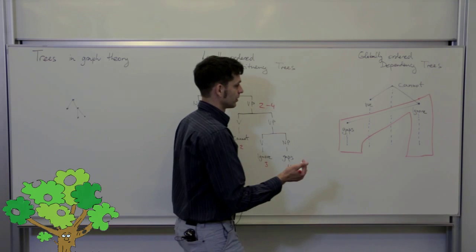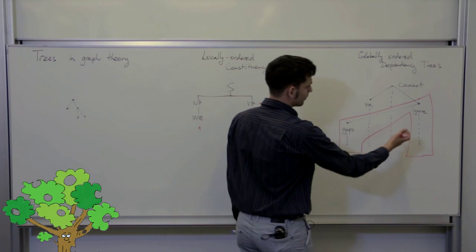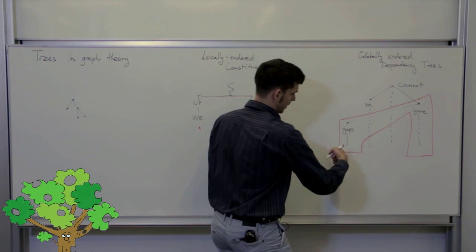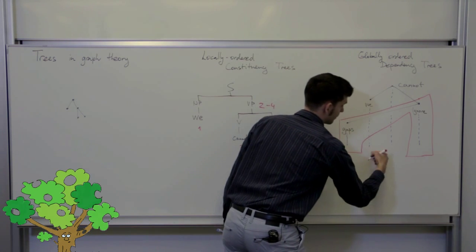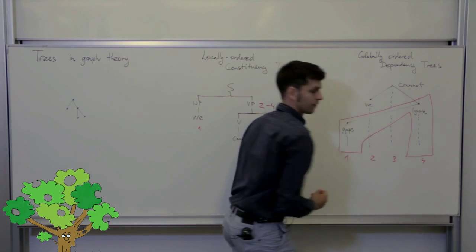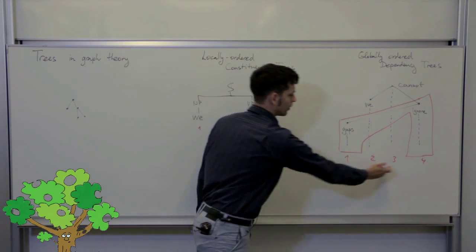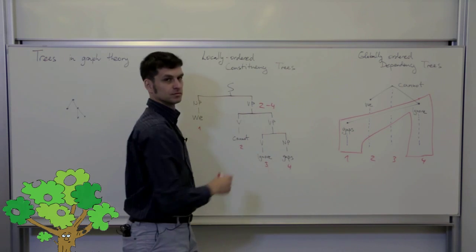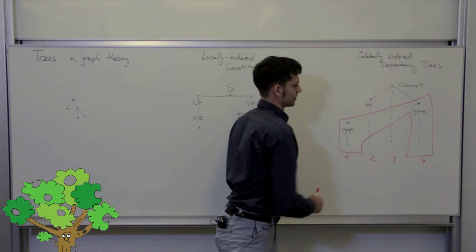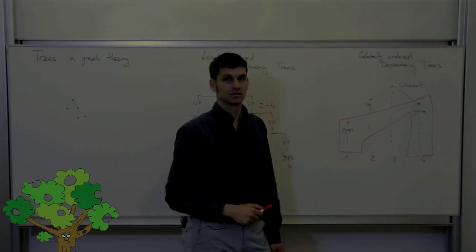In dependency trees with non-projectivities, to adequately record the gap sub-tree, we need to know where the span begins, where the gap begins, where the gap ends, and where the span itself ends. So it's four indices instead of just two. For this style of parsing, it holds that the more gaps there can be in the sentence, the harder the complexity of the parsing.